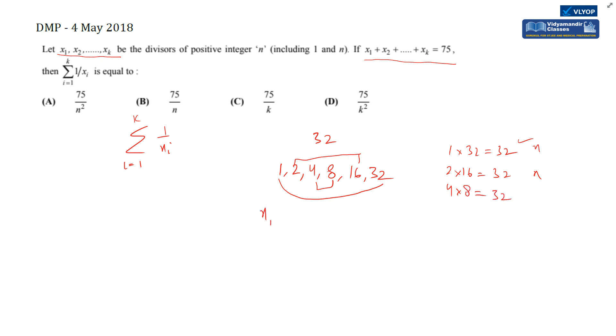So the pattern is: x1 × xk = n, x2 × xk-1 = n, x3 × xk-2 = n. First and last multiply to give n, second and second-last multiply to give n, and so on.